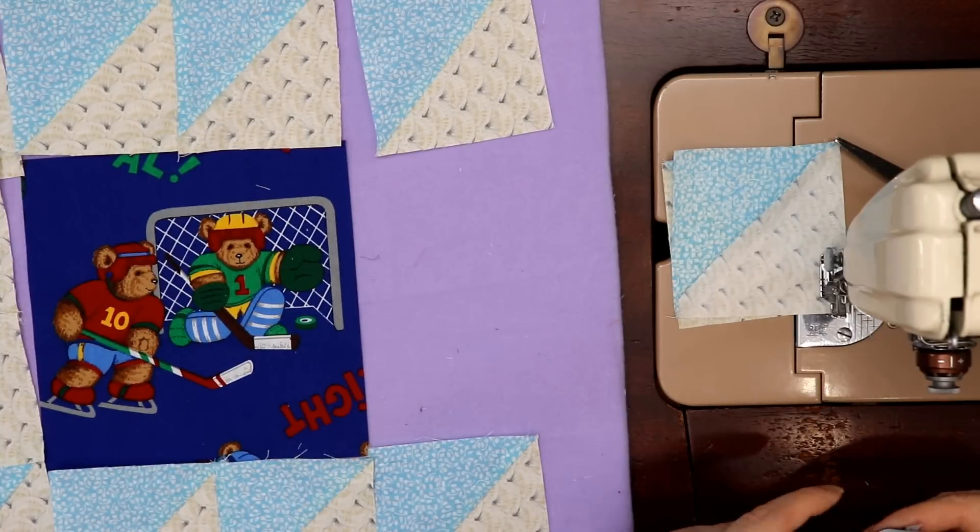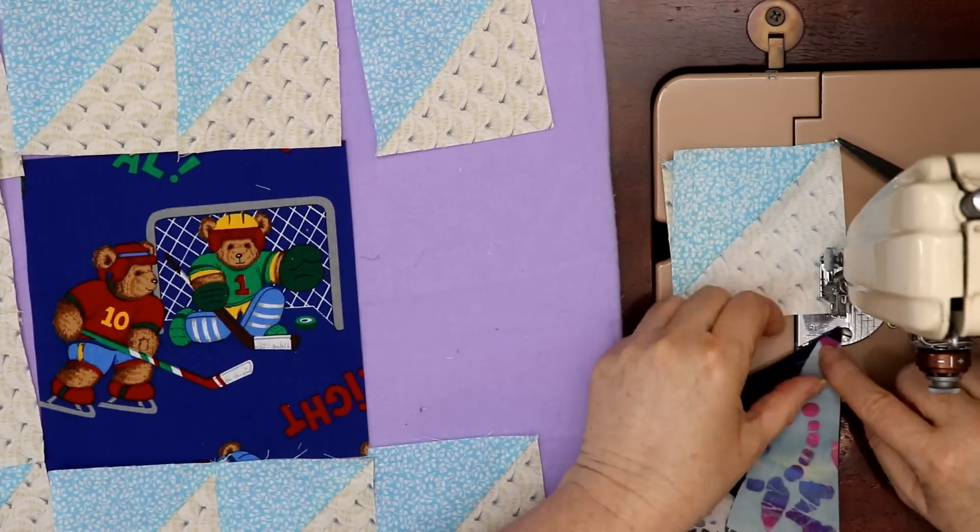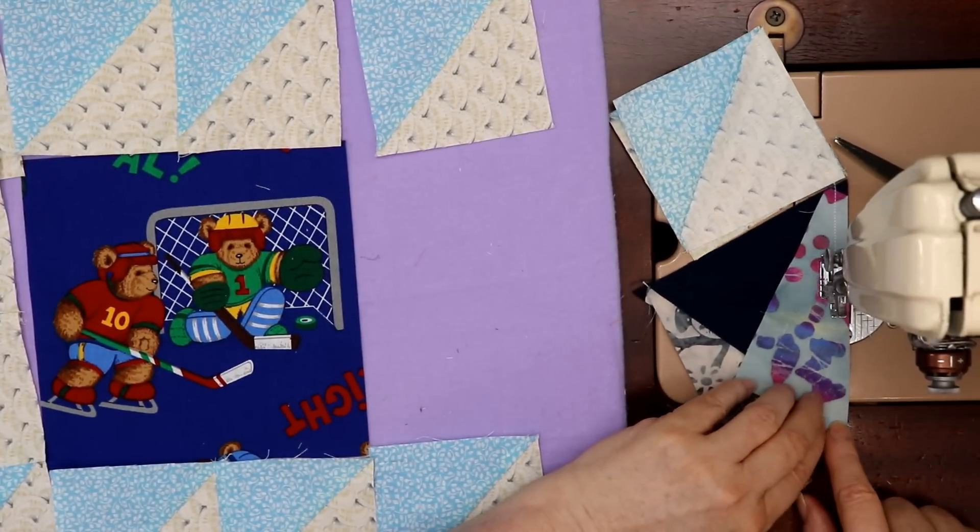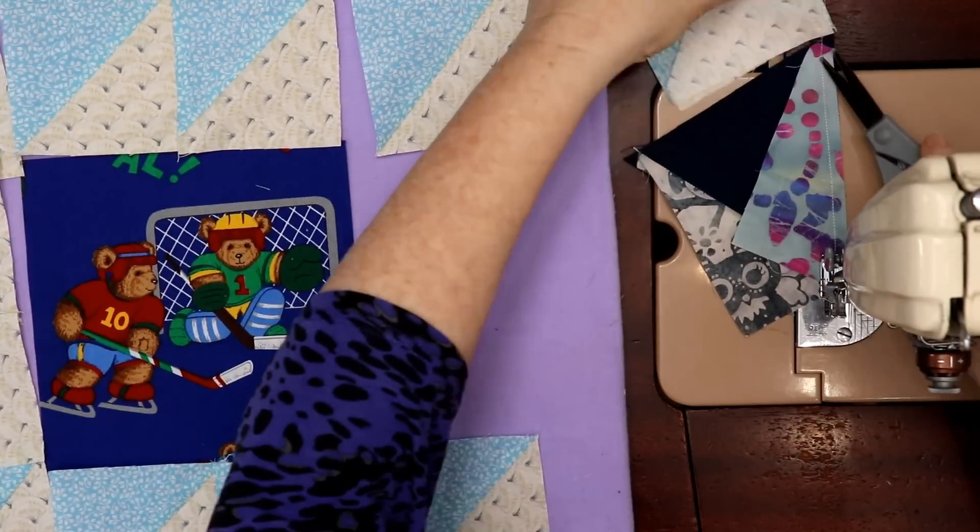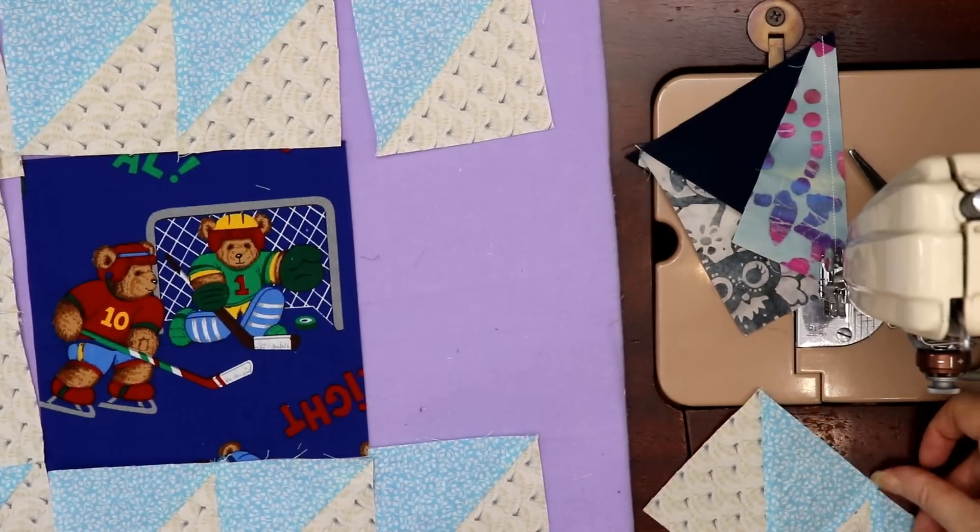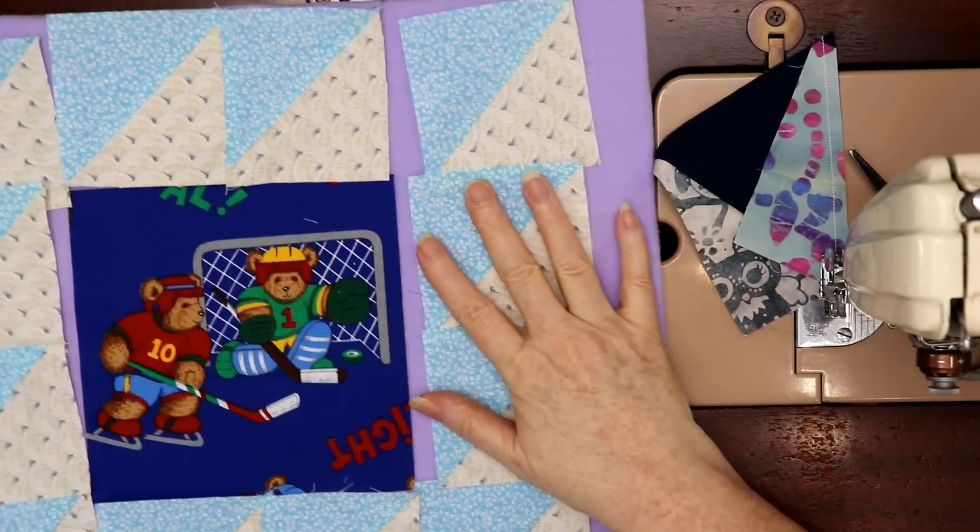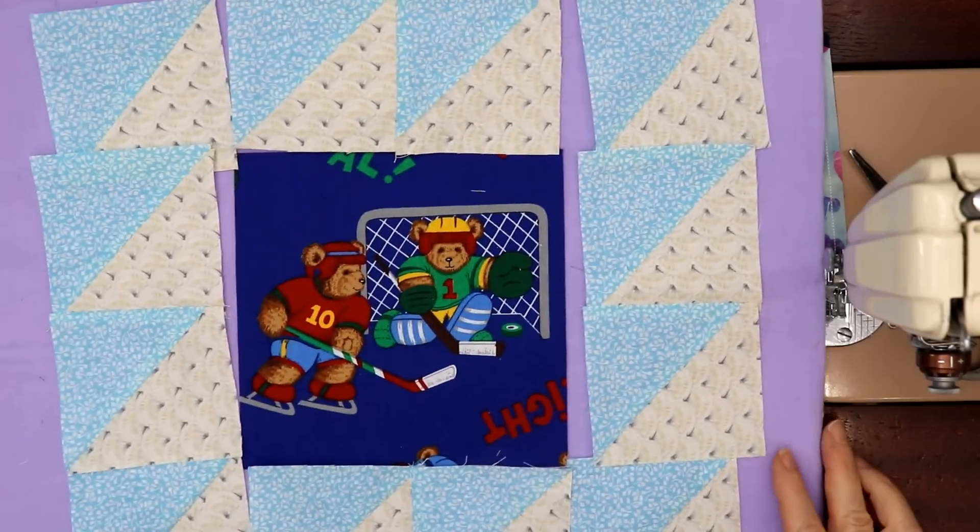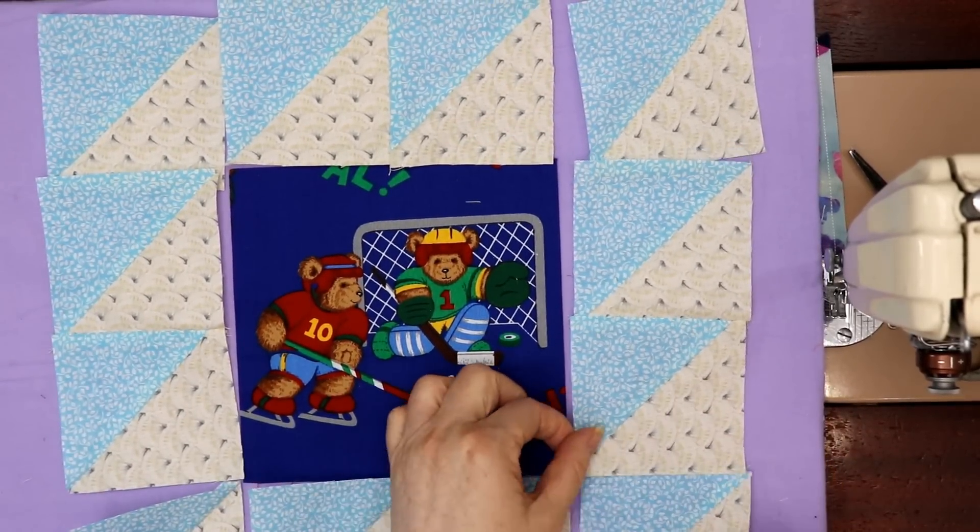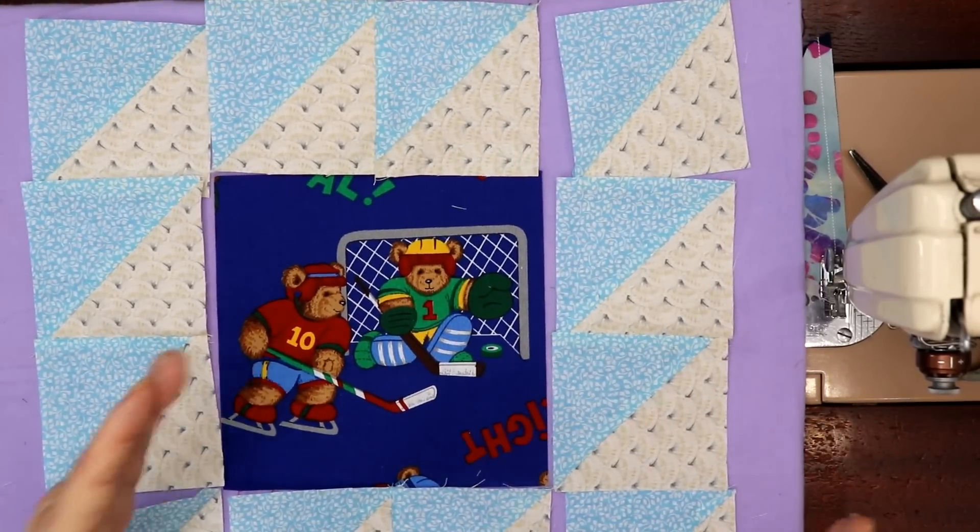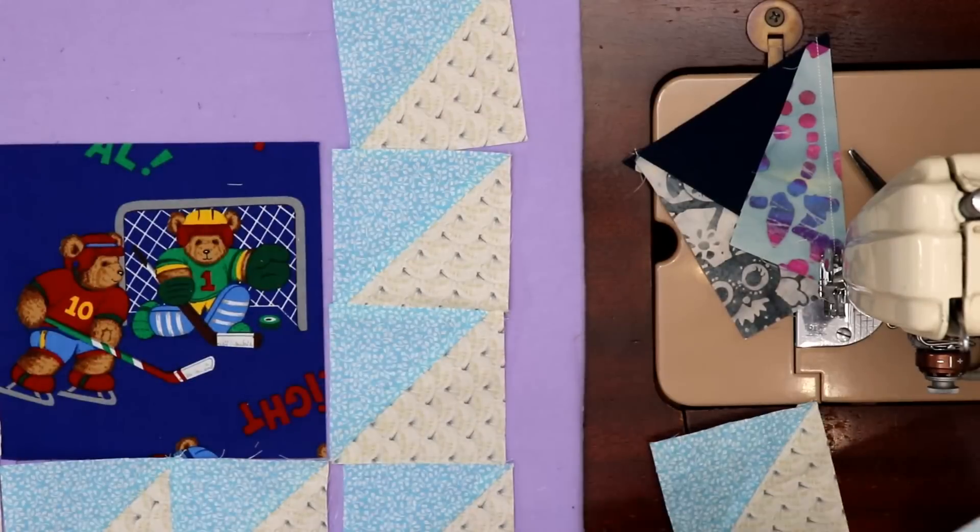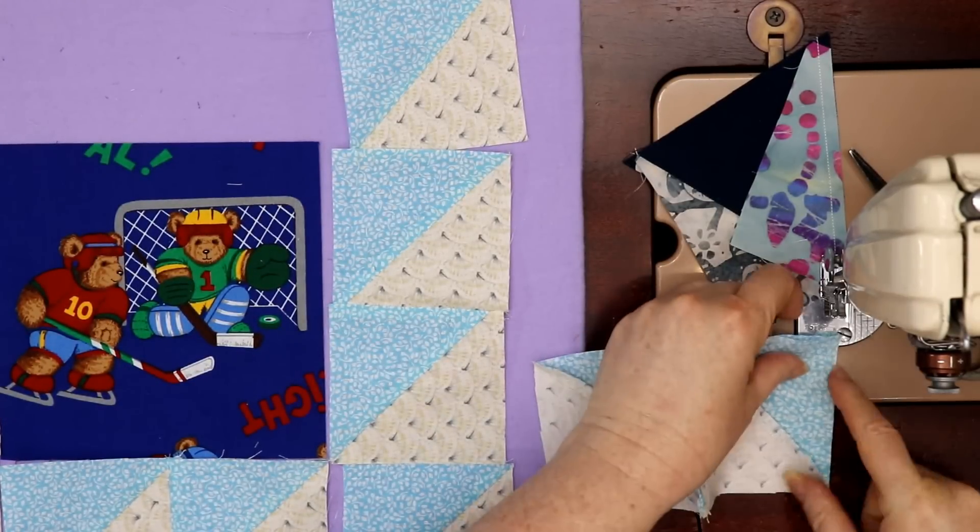When you're putting the other side of a trirex block, this is just a leader ender, try and match up the little peak. Now you always put it back together to make sure you haven't sewn something wrong because it's easier to rip out one little seam than a bunch of big ones.